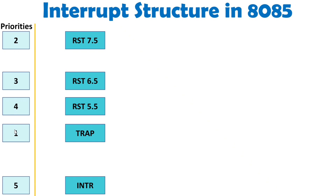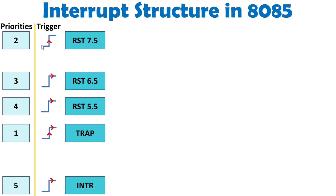In terms of priorities, the highest priority is with TRAP, then RST 7.5 has the second priority, third is RST 6.5, fourth priority is RST 5.5, and the least priority is with INTR. Regarding how those interrupts are triggered: TRAP is triggered with both edge trigger and level trigger. RST 7.5 is the only interrupt triggered by edge trigger. RST 6.5, RST 5.5, and INTR are triggered by level trigger signal.